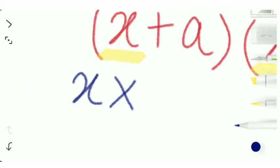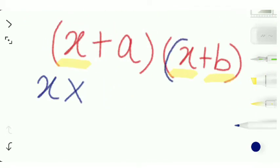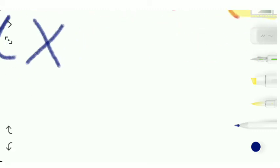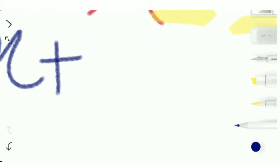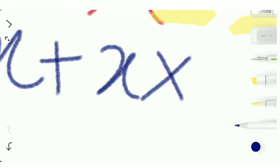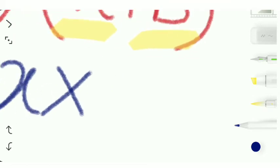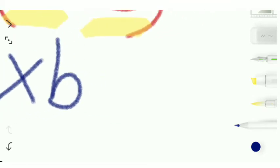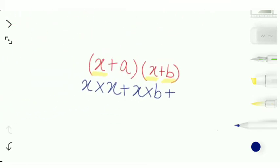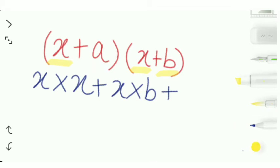X multiplied by the first term of the first bracket, which is also x, and x multiplied by the second term of the second bracket, which is b. Okay, and now we are going to multiply the second term of the first bracket, which is a, with the second bracket which consists of x and b. Let's write that.